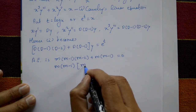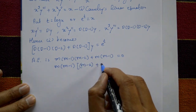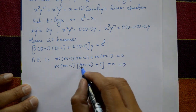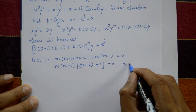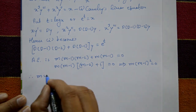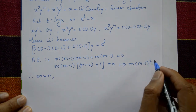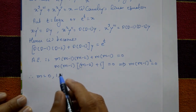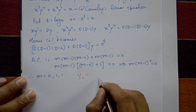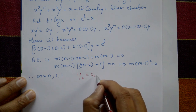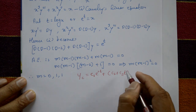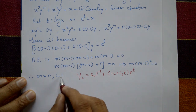Factor: m(m−1) is common, giving m(m−1)[(m−2) + 1] = m(m−1)(m−1) = m(m−1)² = 0. So the roots are m = 0 and m = 1 (repeated twice). The complementary function is yc = c₁ + (c₂ + c₃·t)·e^t.